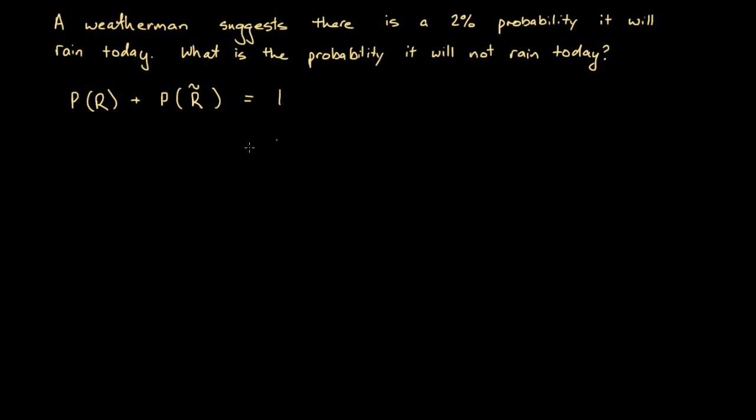So this is a fundamental theorem, and we're also given the probability that it will rain. So the probability that it will rain is 2%.